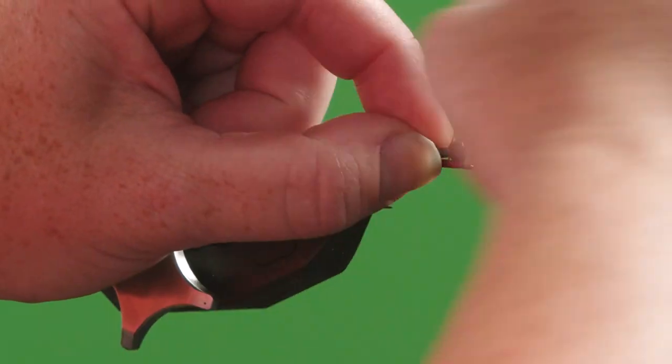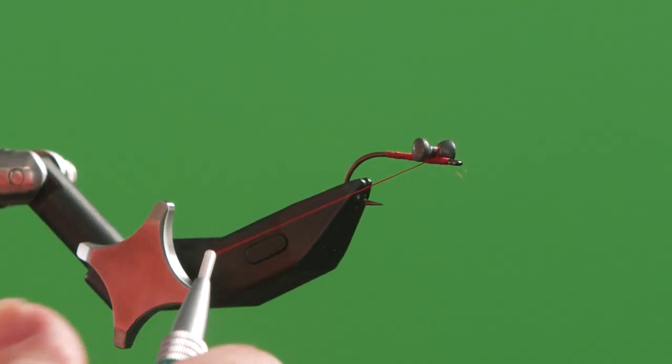So what I'm going to do is start slightly behind the eye of the hook so as to not crowd that. I'm going to add in my dumbbell eyes by diagonally wrapping over the middle.